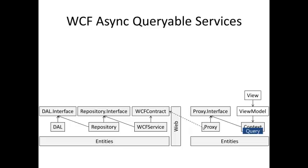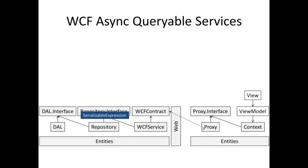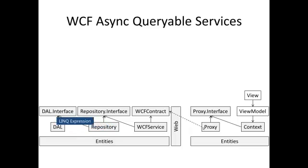Expression trees are not serializable, so I define my own serializable expressions that describe LINQ expression trees. The serializable expression is sent to the server, which transforms it into a LINQ query using a visitor. I can very easily change the query on the server in order to include rights logic, for example. I have a special visitor for LINQ to Entities that improves it. For example, I can use datetime subtraction in my query, which is not supported by LINQ to Entities yet. Then the query is executed on the data access layer, and the result is sent to the view model.